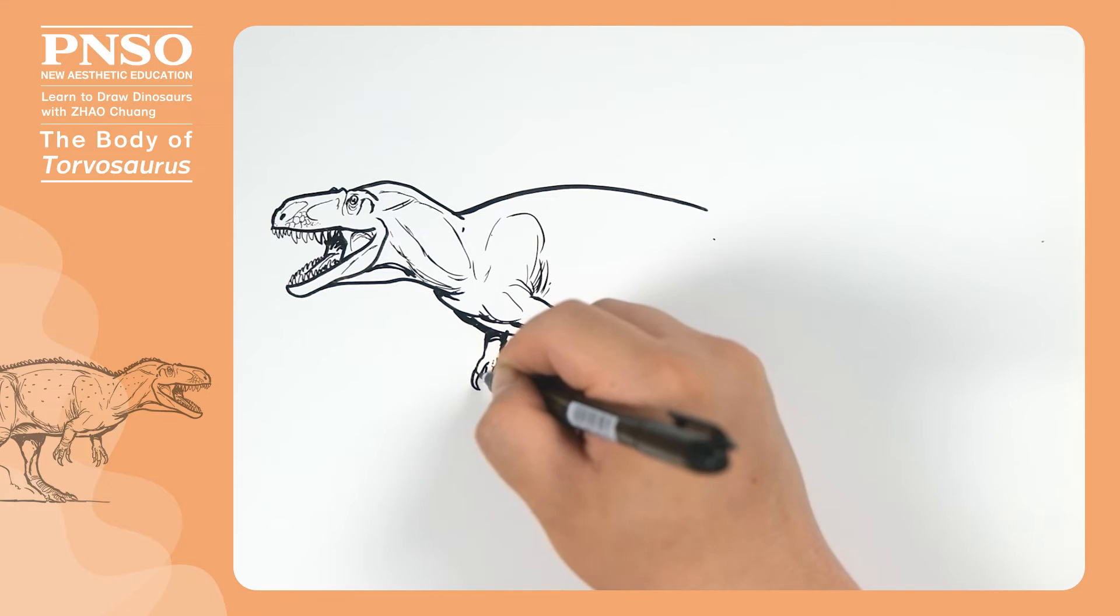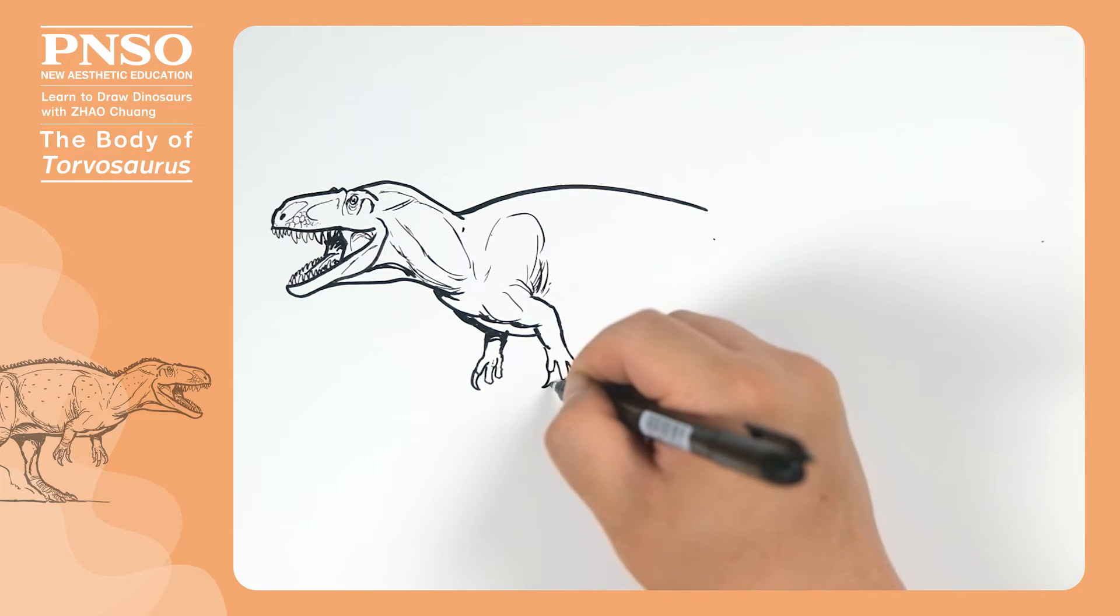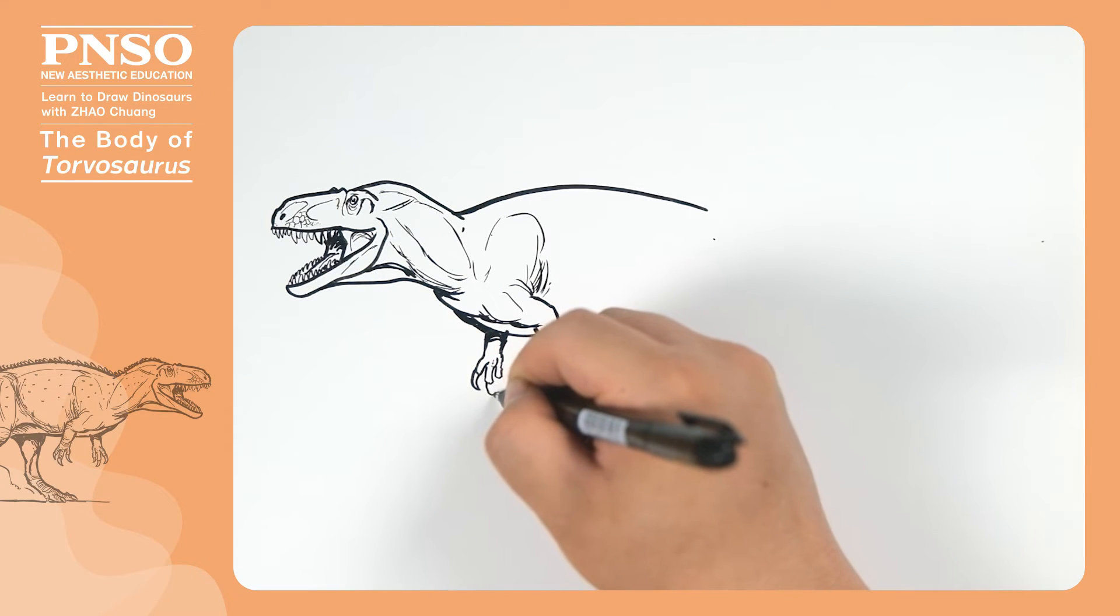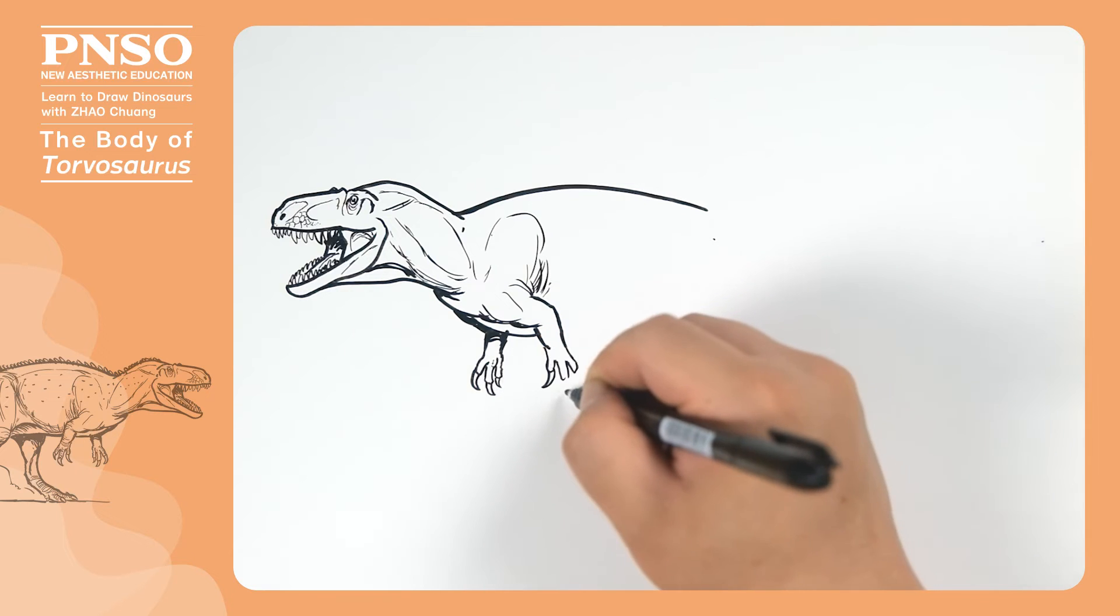Then move on to its claws. The first being the longest, the second being shorter, and the third the shortest. Draw some large scales on the back of the fingers.